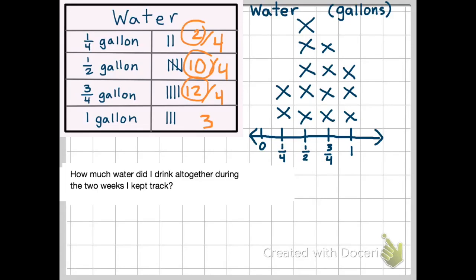Two, ten, and twelve. Two plus ten plus twelve equals twenty-four-fourths, which is an improper fraction. So I know it takes four-fourths to make a whole, so twenty-four divided by four equals six, so I can make six wholes out of that. But I still have to remember that I have these three gallons that I need to add in. So six plus three equals nine.